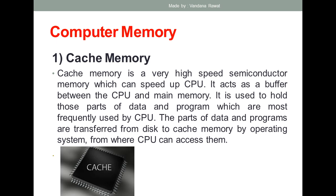One example of cache memory is the copy and paste operation. If you want to paste the same information again and again — for example, pasting your name on every page of a document — you copy that data and paste it repeatedly. This repetitive operation is basically performed by cache memory. The parts of data and programs are transferred from disk to cache memory by the operating system, from where the CPU can access them.